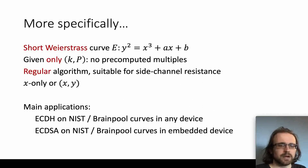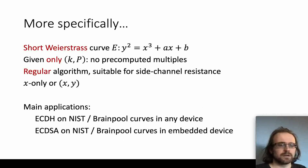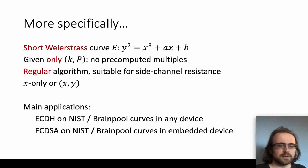In a regular algorithm, no matter what k is, the algorithm always does the same operations in the same order, although possibly swapping the data depending on what k is. Depending on the protocol, in some cases P is given as x and y coordinates, and in some cases only the x coordinate is given and only the x coordinate of the output is desired. We'll handle both of those cases. The main application is elliptic curve Diffie-Hellman key exchange, but on an embedded device it would also be very useful for ECDSA signatures, key generation, and so on.